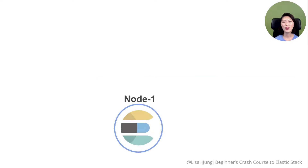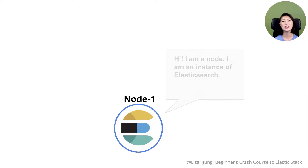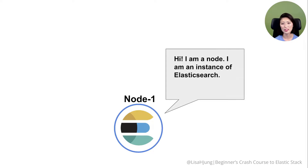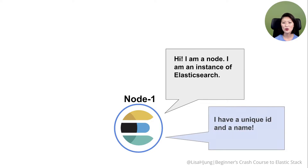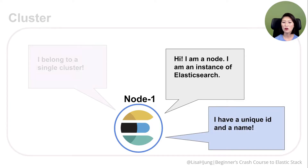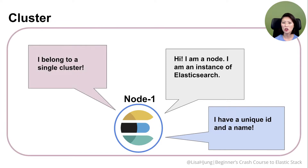When Elasticsearch is up and running, you now have an instance of Elasticsearch, also known as a node. Each node has a unique ID and a name, and it belongs to a single cluster.